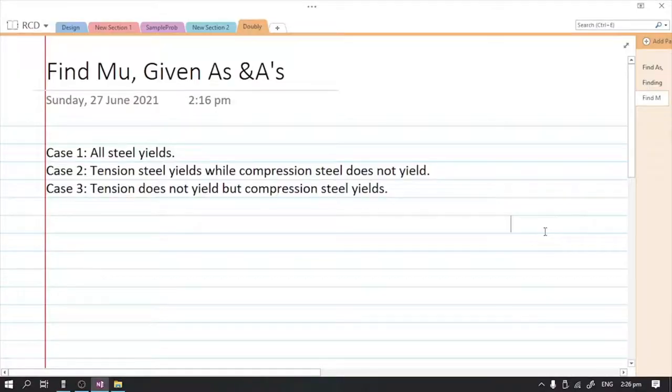This is the continuation for the analysis and design of doubly reinforced beam. Now we are going to determine the ultimate moment capacity of a beam given its properties and also the tension and compression steel reinforcement. We have here three different cases, so for our case number one...